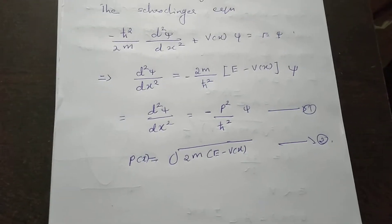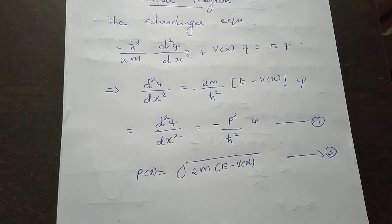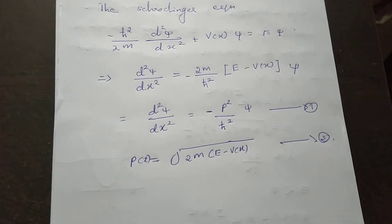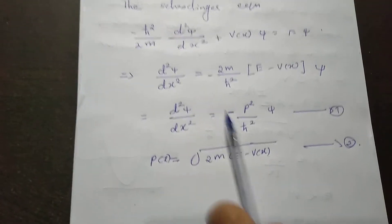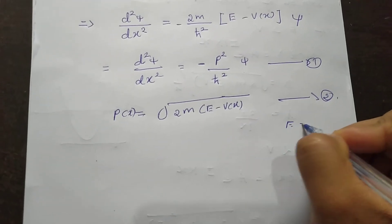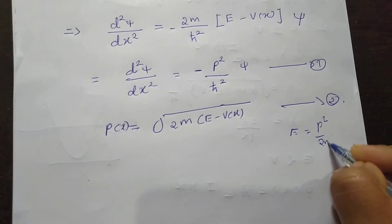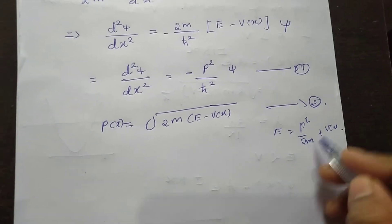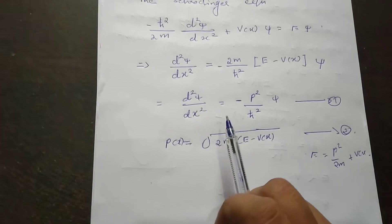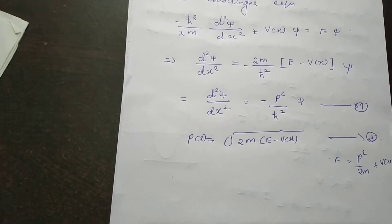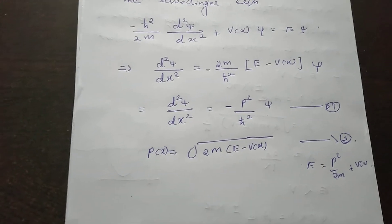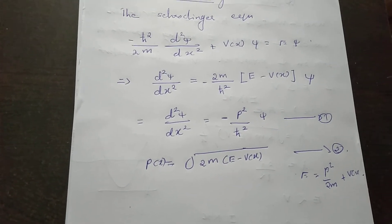This is the classical expression for the momentum. This is the classical formula for the momentum. This is the total energy E. This equation is actually: total energy equals kinetic energy plus potential energy, that is p squared by 2m plus V(x). This equation number 2 is the classical formula for the momentum, relating total energy E and potential energy V(x).